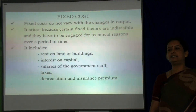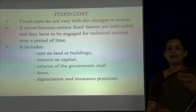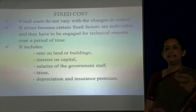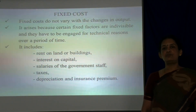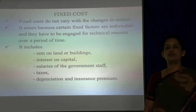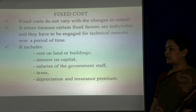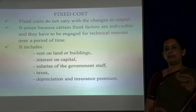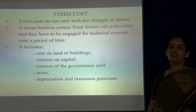Next, fixed cost. Fixed cost does not vary with the changes in output; it remains constant over a period of time. It arises because certain fixed factors are indivisible and have to be engaged for technical reasons over a period of time. It includes rent on land or buildings, interest on capital, salaries of the government staff members, taxes, depreciation and insurance charges.